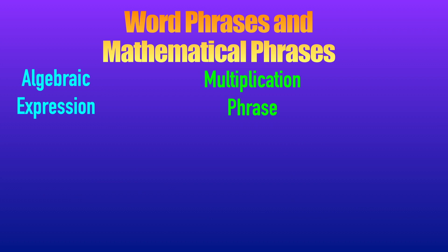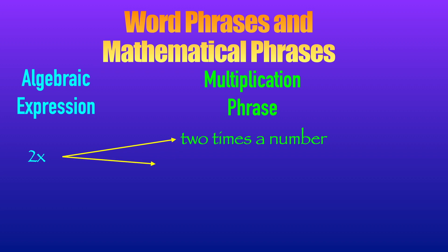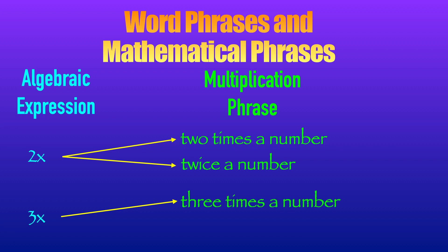There are also special terms in multiplication. For example, 2x can be expressed as '2 times a number,' and also as 'twice a number.' Note that 'twice' is not an exponent — exponent is a different term. For 3x, it is '3 times a number,' and also 'thrice a number.' So for 2x, use 'twice a number'; for 3x, use 'thrice a number.' 'Square' and 'cube' are for exponents. 'Twice' and 'thrice' are not exponents.